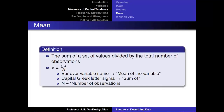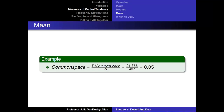The third measure of central tendency is the mean — the sum of a set of values divided by the total number of observations. Formally, x̄ = Σx / n, where x̄ is the mean, Σ means the sum of all observations, and n is the number of observations. For our common space score example, the sum of the common space scores was 21.788 and the total number of observations was 437. 21.788 divided by 437 equals 0.05, so the mean common space score was 0.05.